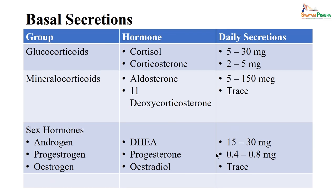There is also a diurnal variation. Physiologically these steroids are released in the body — glucocorticoids in the form of hormones: cortisol or corticosterone. Daily secretion is 5 to 30 milligrams for glucocorticoids, and 2 to 5 milligrams for mineralocorticoid aldosterone. Sex hormones: DHEA, progesterone, and estradiol are released at 15 to 30 milligrams, 0.4 to 0.8, or in trace amounts. This physiological level is important, because in situations like steroid misuse — such as in doping — you need to know how much exogenous steroid has been used.